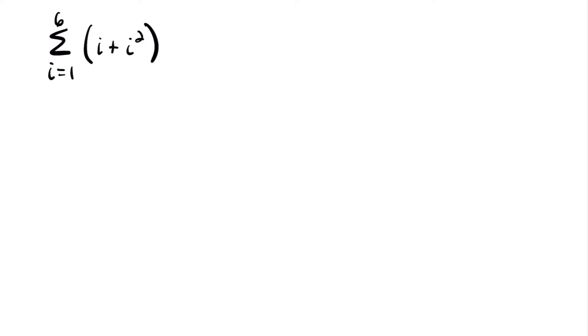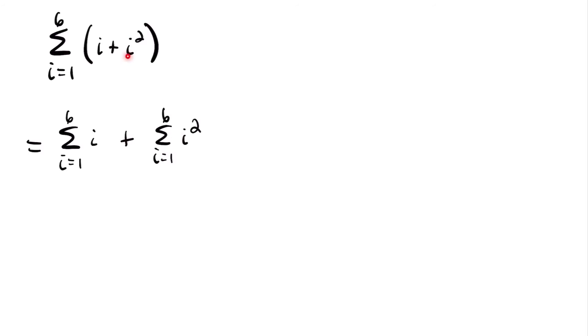Our other property for summations: if we have the sum from i equals 1 to 6 of i plus i squared, we can split this into two separate sums. This equals the sum from i equals 1 to 6 of i, plus the sum from i equals 1 to 6 of i squared. We split each part into its own sum with the same bounds from 1 to 6, which makes it easier to find the total.